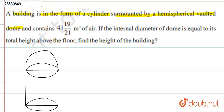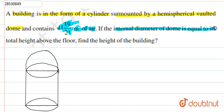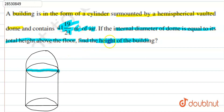It contains 41 and 19/21 meter cube of air. This contains — that is, if we have the volume of the building, this volume is the same as the volume of the building. If the internal diameter of the dome is equal to its total height above the floor, we need to find the height of the building.